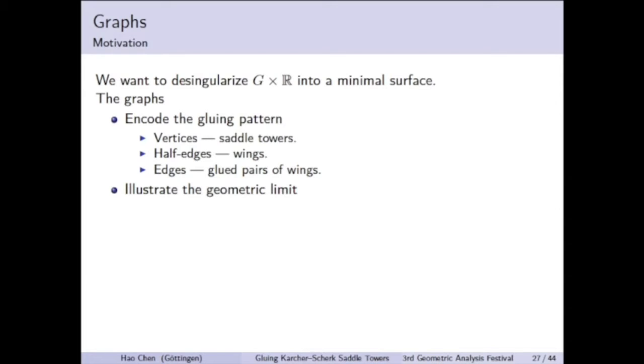On the other hand, we also use the graph to illustrate geometric information of the saddle tower limits. In this context, the vertices are the vertical singular lines that we want to desingularize. We allow edges to be represented by the same segment because in the saddle tower limits, parallel wings cannot be distinguished from a distance if you look at the surface from a distance.